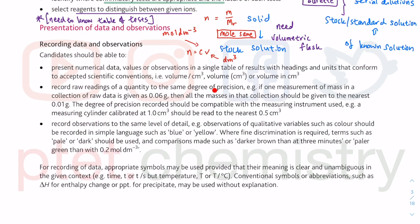For presentation of data and observations: make sure that you have units — you do a stroke and then the units, or put them in brackets, or write them saying 'volume in cm³'. You have to label. Labels are important — labels basically show who you are. Not as someone sloppy, but as someone who knows what they are doing, as a competent scientist and chemist. You need to label not just for yourself but also to show other people that you are competent in what you do.